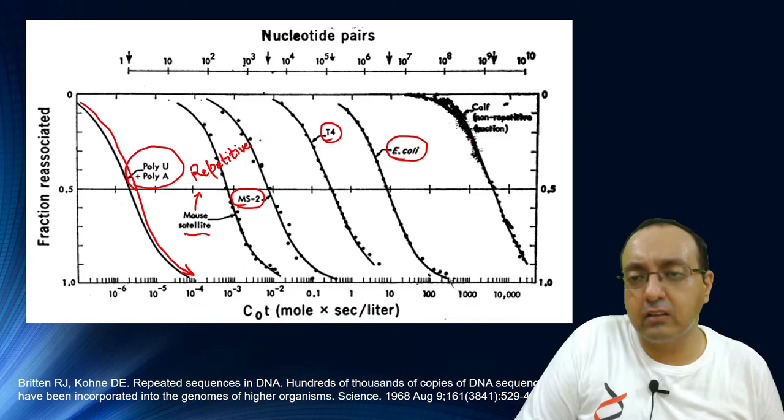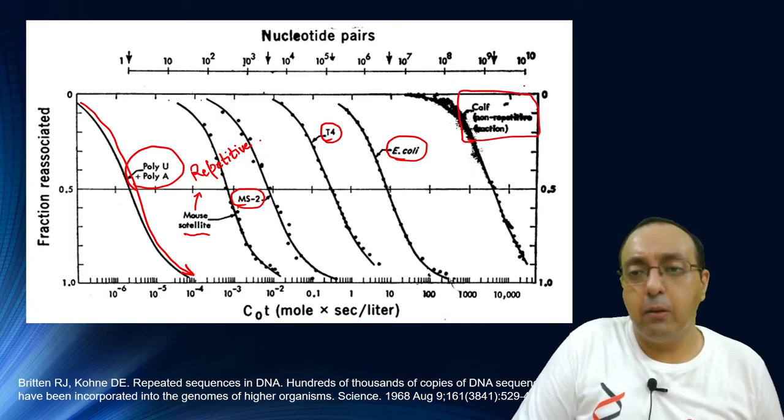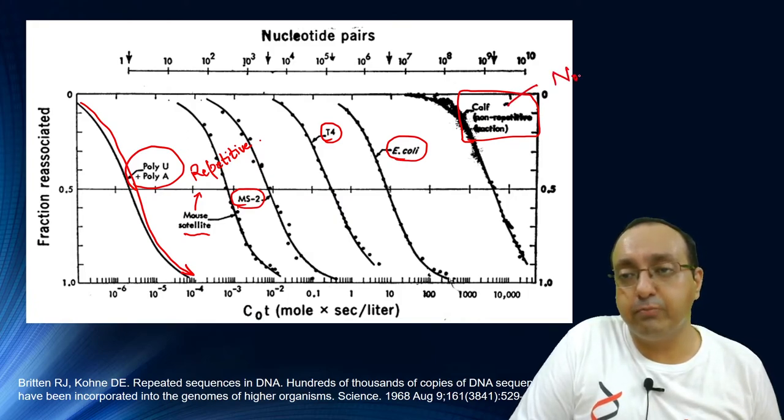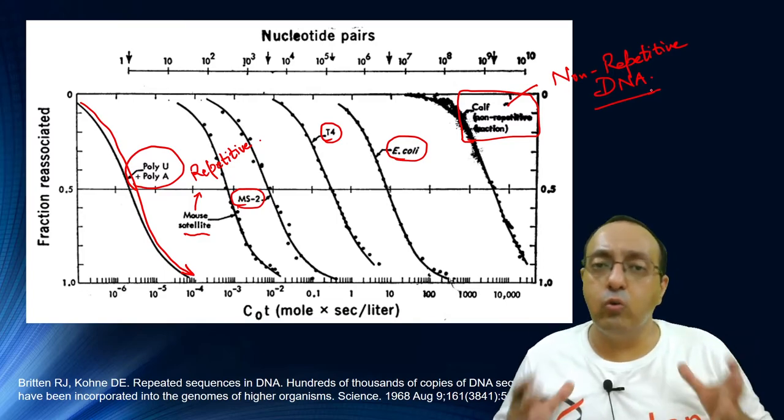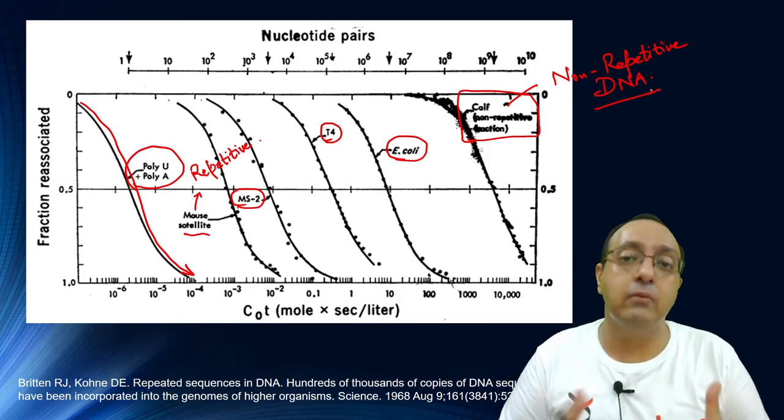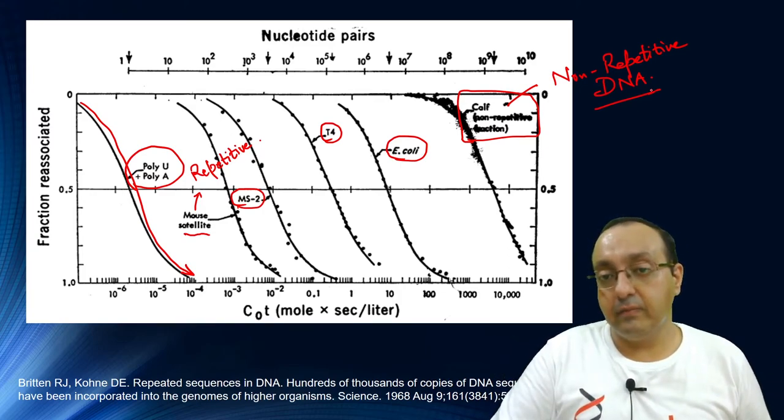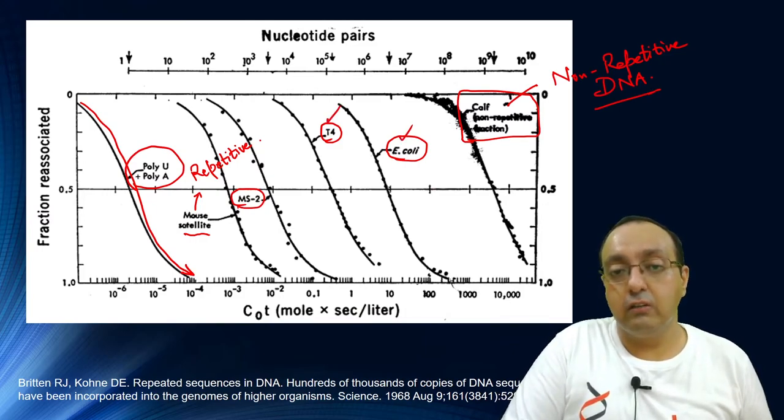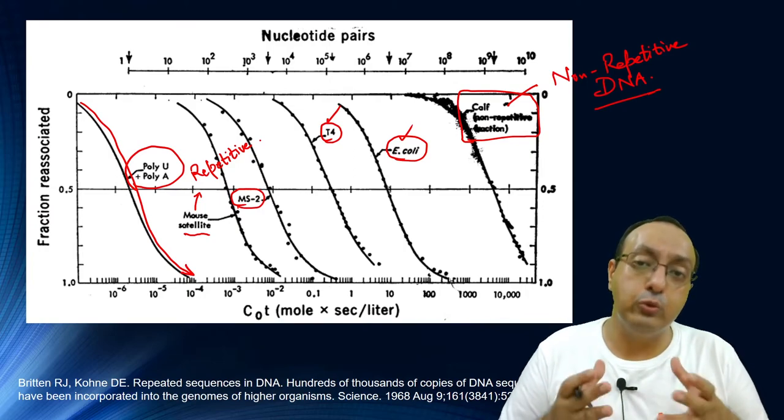Here we have another comparison with calf thymus DNA, another important source of DNA, but this is the non-repetitive portion—here they have removed the satellite DNA. What's happening is you're only considering unique sequences in the DNA, and because unique sequences take a long time to reassociate, the Cot value will be higher compared to E. coli or T4, which are much smaller and mostly composed of unique sequences.